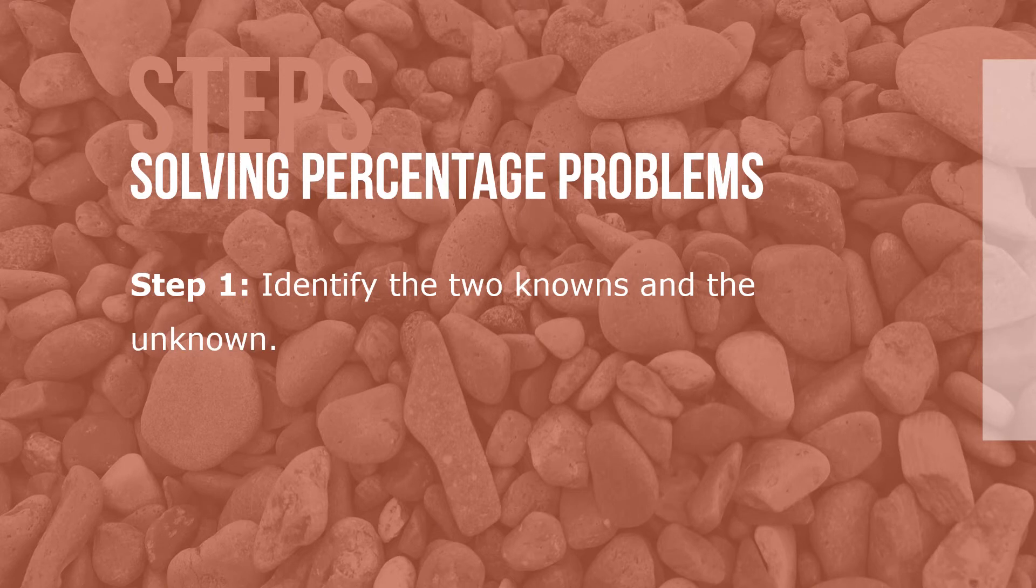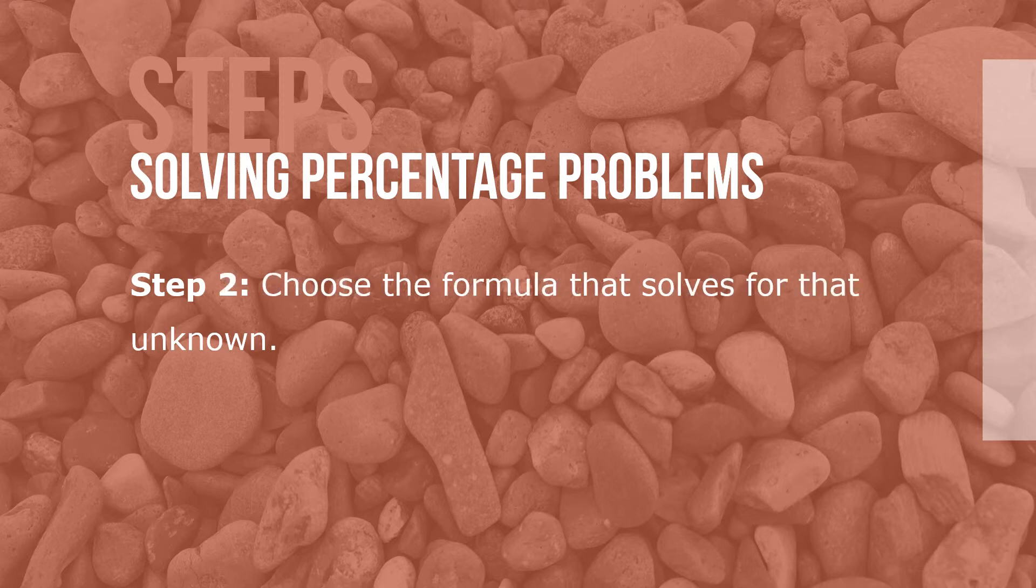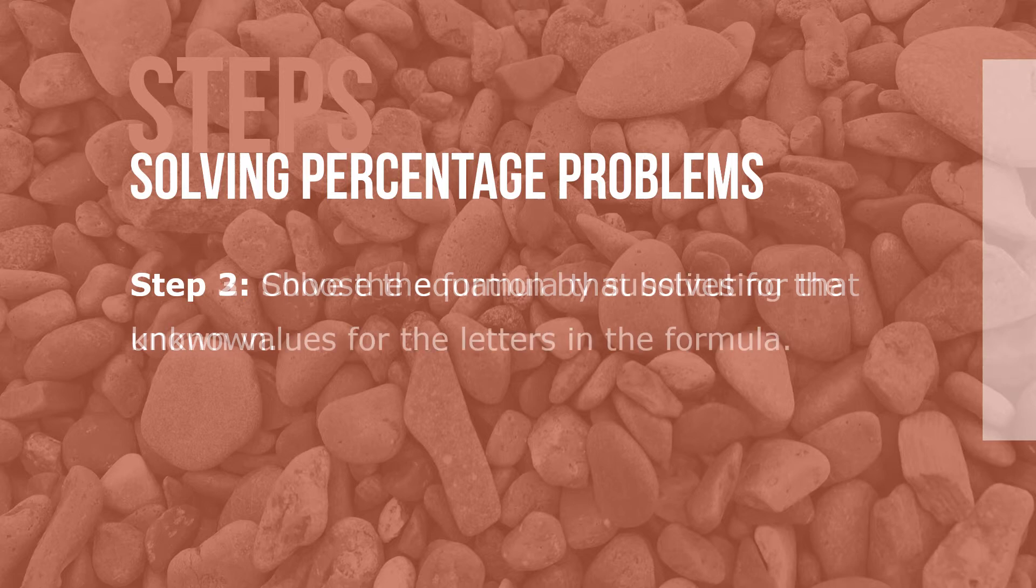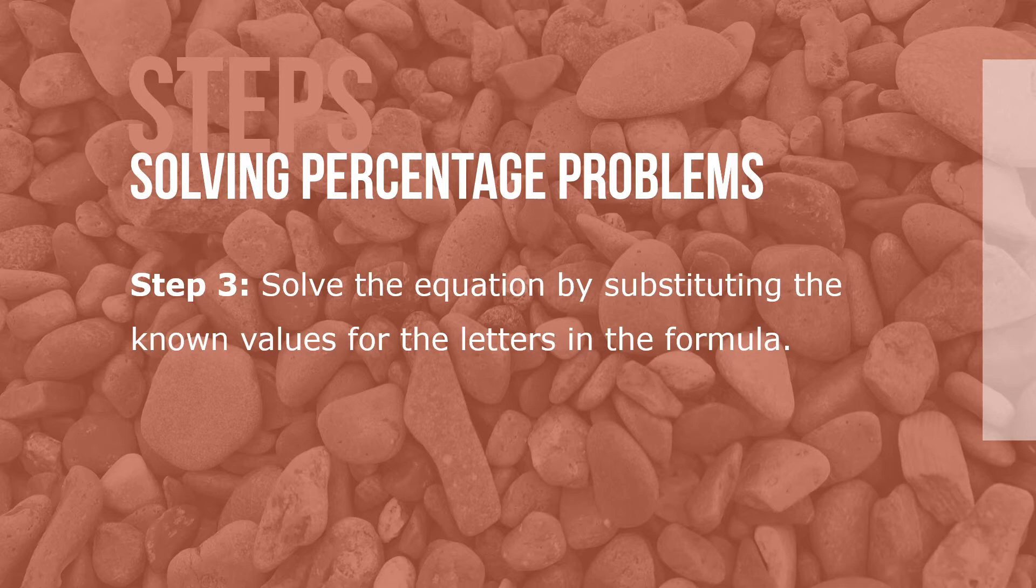Here are the steps to solving percentage problems. Step 1: Identify the two knowns and the unknown. Step 2: Choose the formula that solves for the unknown. Step 3: Solve the equation by substituting the known values for the letters in the formula.